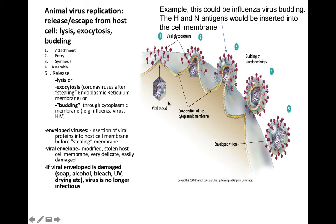For HIV, it has to insert its adhesin GP120 and the fusion protein GP41 into the cell membrane that will become its envelope. Eventually the mature virus escapes and is released, having stolen that cytoplasmic membrane. All of the viral adhesins would have to be in the envelope, and then the virus will go and bind to a neighboring cell and start the process all over again.